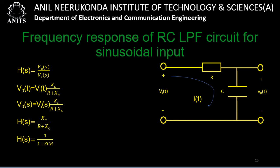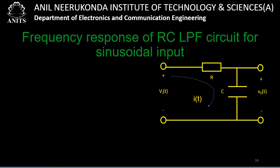Substituting Xc = 1/(sC) into the transfer function gives H(s) = 1/(1 + sCR). Representing in terms of frequency with s = jω = j2πf, the transfer function becomes H(f) = 1/(1 + j2πfCR).